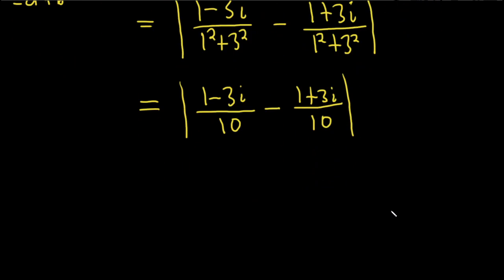And now we can perform the subtraction. So this is equal to the modulus of, this will all be over 10. So it's 1 minus 3i, and then minus, and then parentheses, 1 plus 3i.